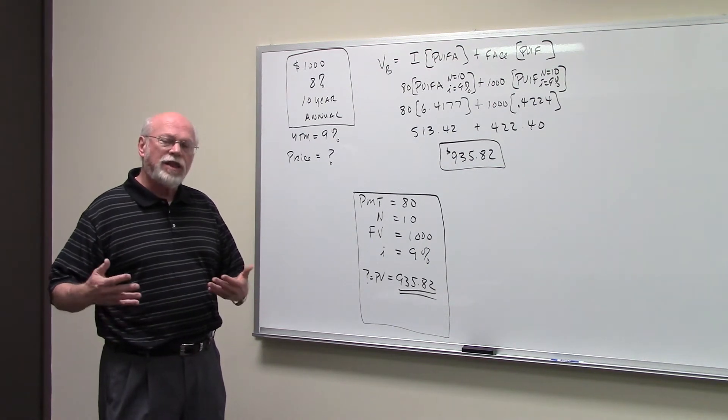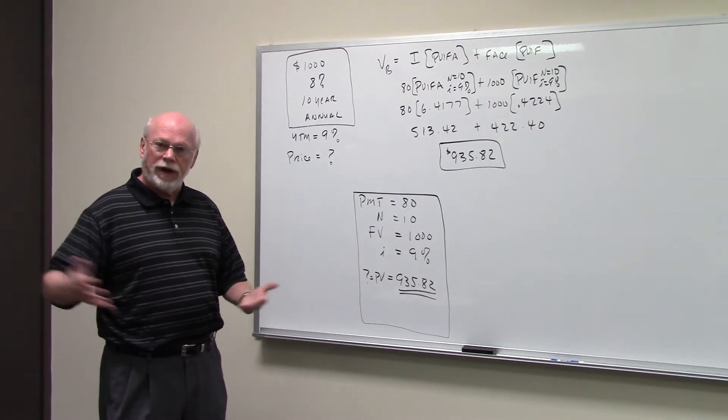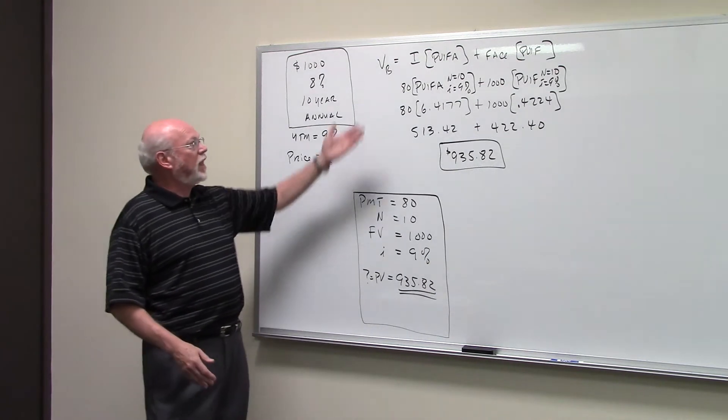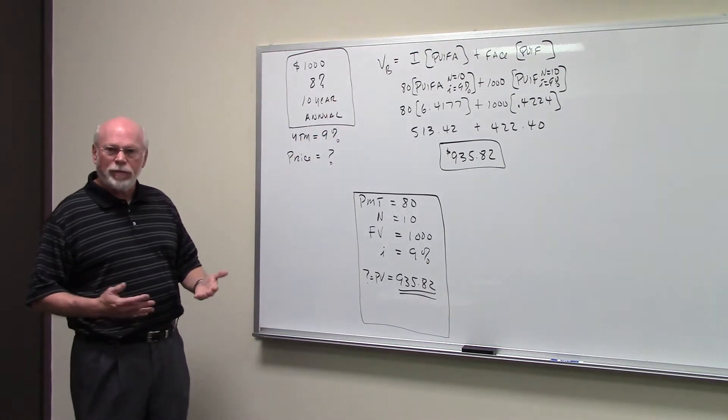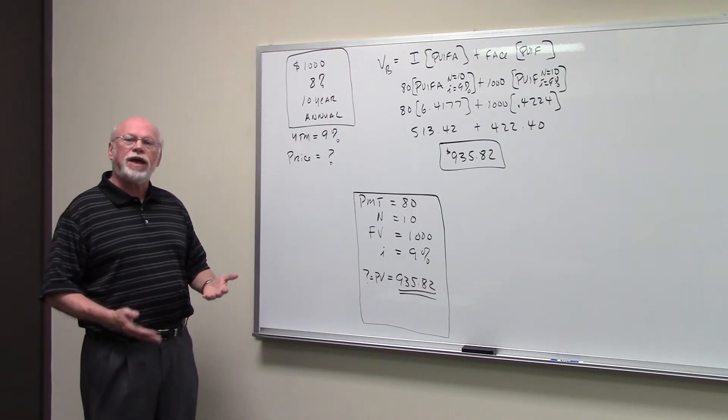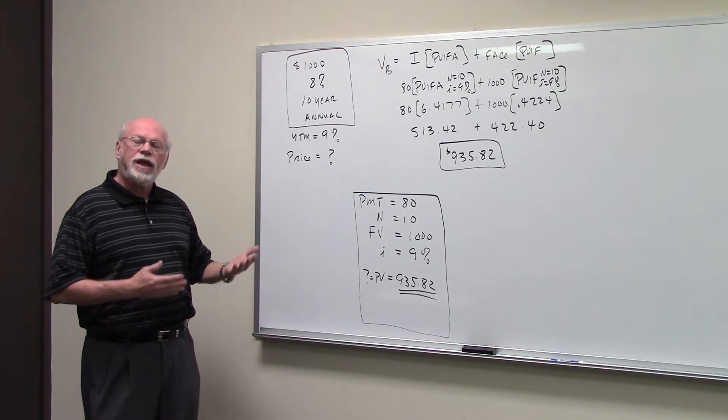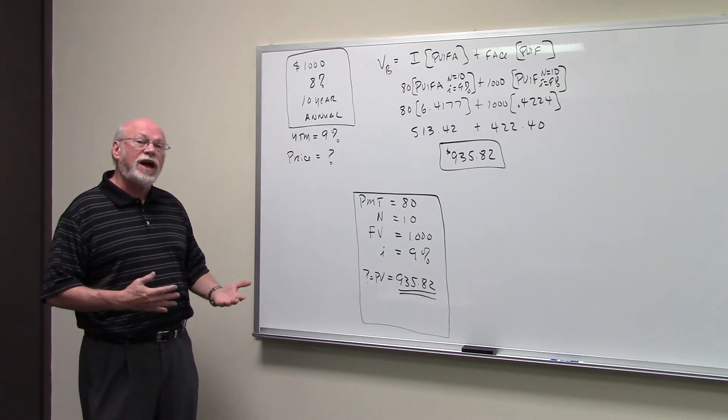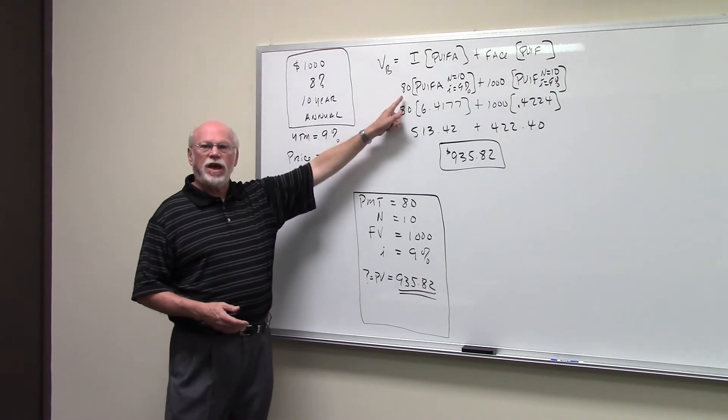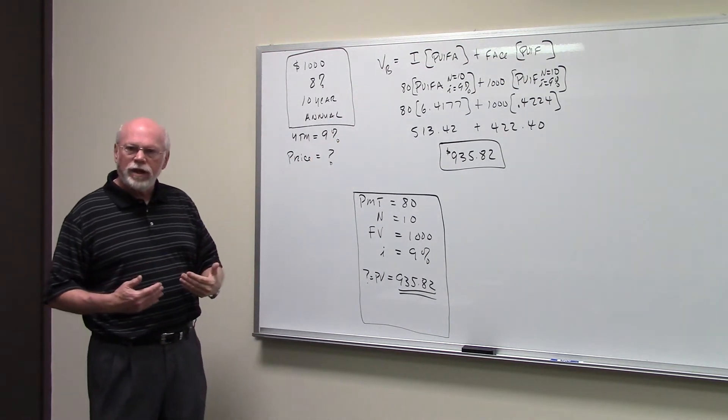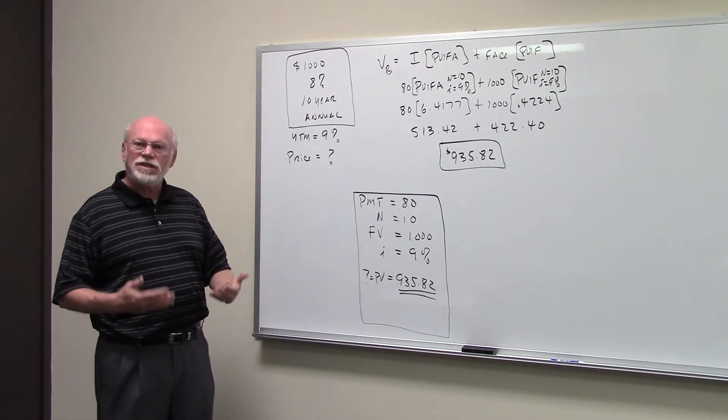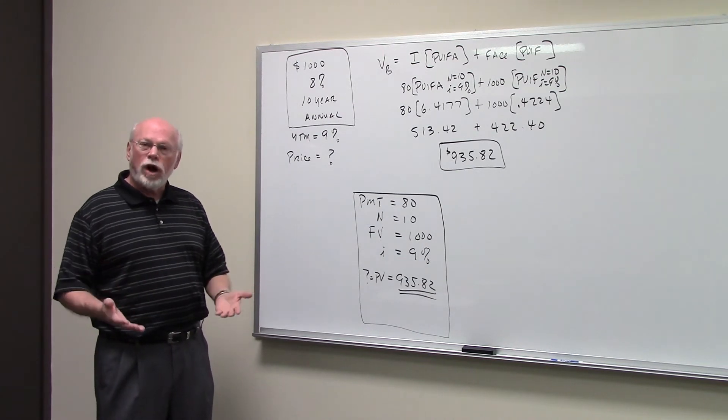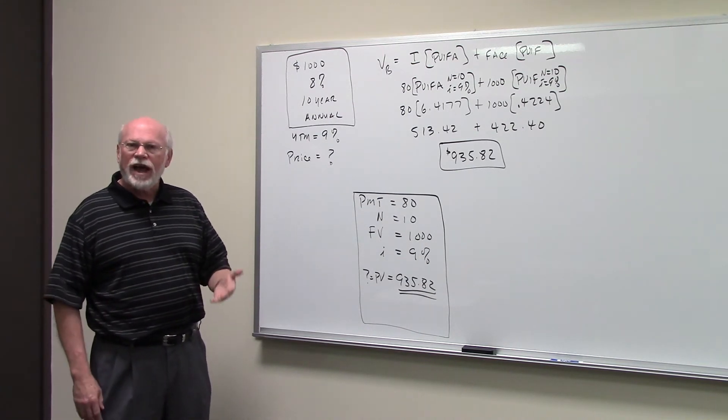The face value of the bond that you receive at the end of the life of the bond. In this particular case, to get the annual interest the bond pays, you simply multiply the stated return on the bond times the face value. So 8% of $1,000 is $80. That's the annuity. You're going to get that every year for 10 years, and your required return is 9% per year.